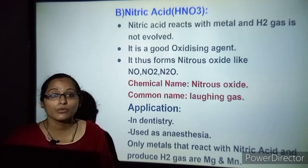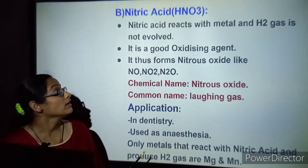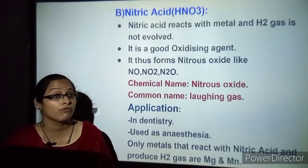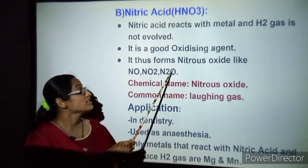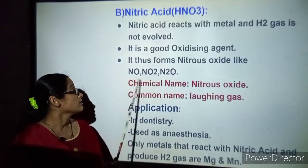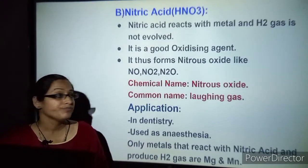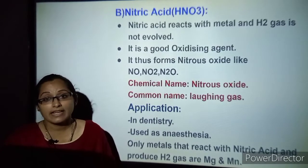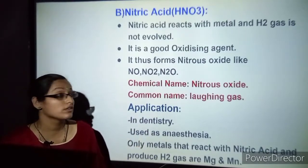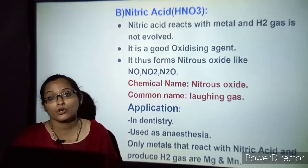Next comes nitric acid (HNO₃). Nitric acid reacts with metals, but unlike other acids hydrogen gas does not evolve here — because nitric acid is a good oxidizing agent. It forms nitrous oxides: NO (nitrogen monoxide), NO₂ (nitrogen dioxide), and N₂O (nitrous oxide). The common name of N₂O is laughing gas, used in dentistry as anesthesia. But be careful — prolonged usage might lead to death. Only magnesium and manganese react with dilute nitric acid to produce hydrogen gas.